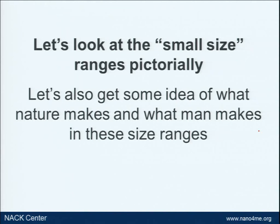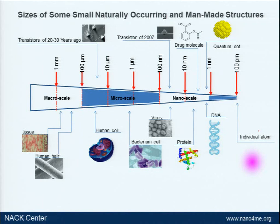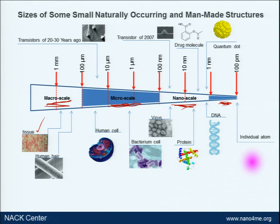Let's take a look at small sizes pictorially and get an idea of what nature makes and what man makes at different size ranges. This shows us different size scales: the macro scale, the micro scale, and the nano scale. Below the nano scale we could call the pico scale. On the bottom we see things that nature makes at these different scales — for example, tissue and the human hair at the macro scale.